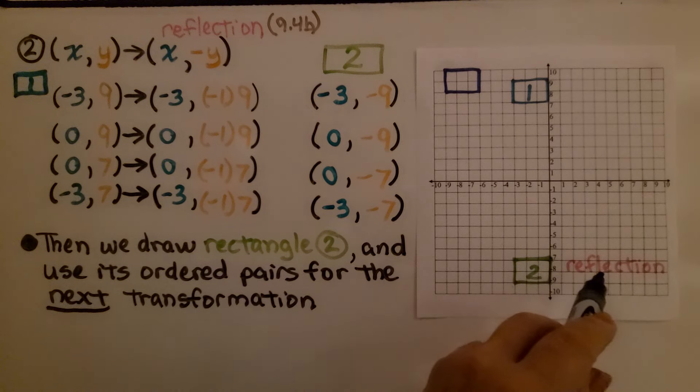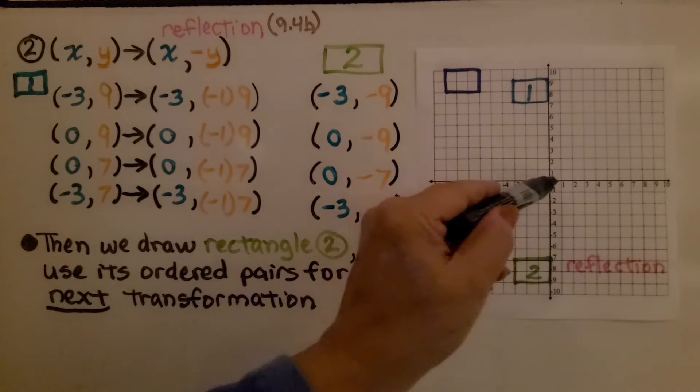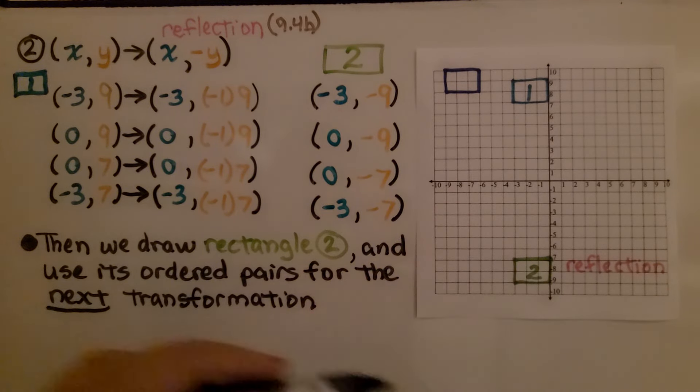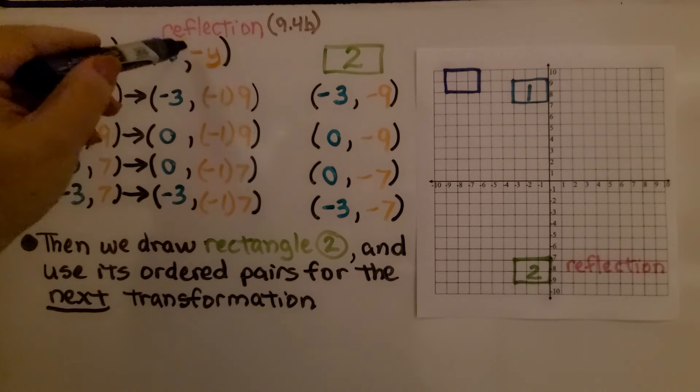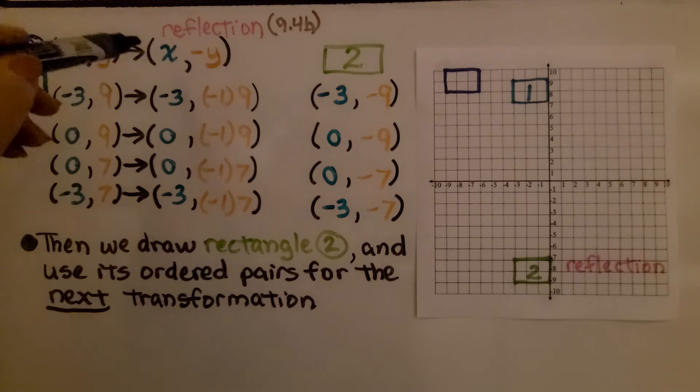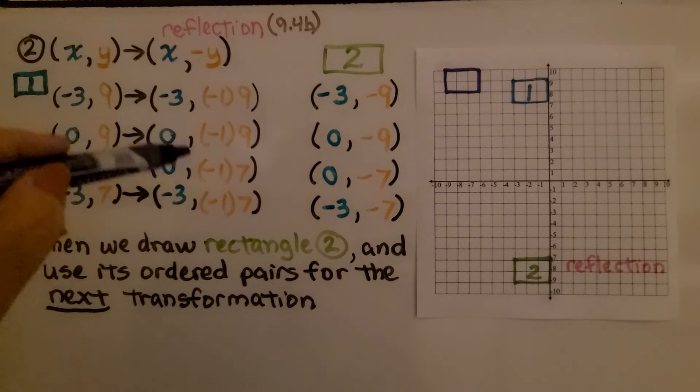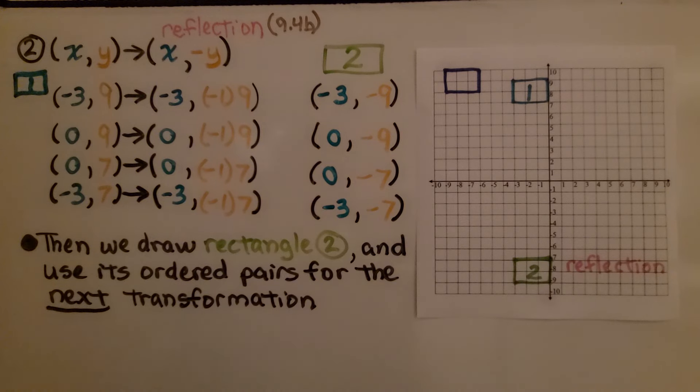We draw the rectangle number 2, and we use its ordered pairs for the next transformation. So this was a reflection. It actually reflected across this x-axis to here. That's what this is. It's a reflection across the x-axis. If it were a reflection across the y-axis, we would have had negative x and then y. Because we see this negative y, we know it reflected across x.